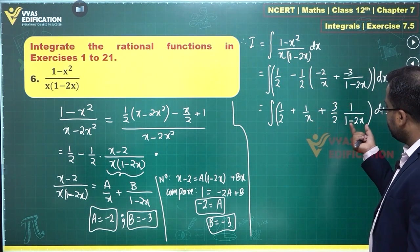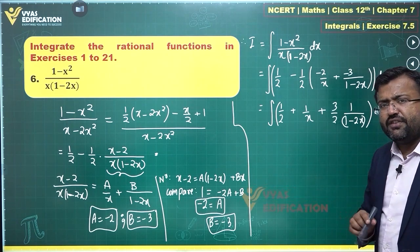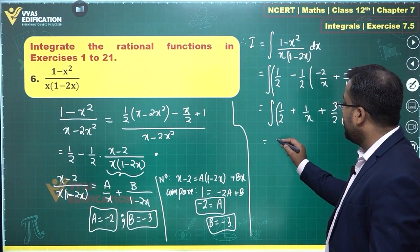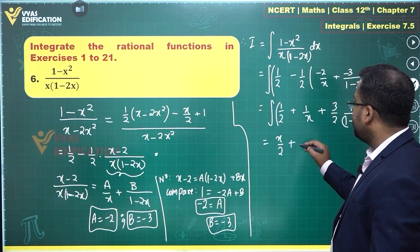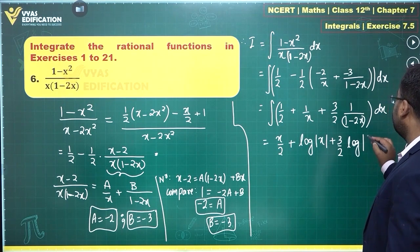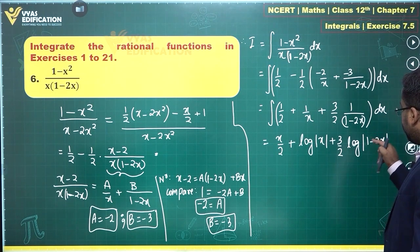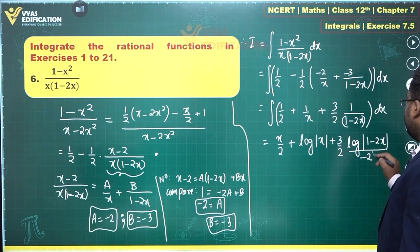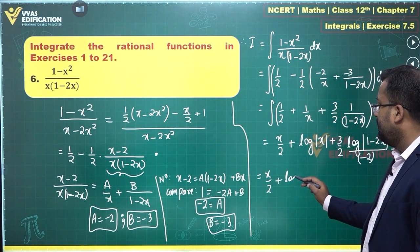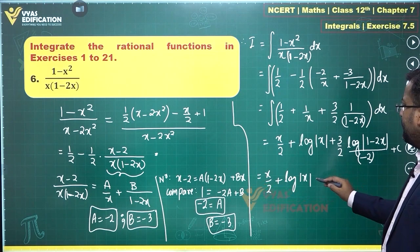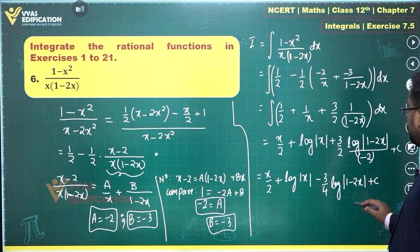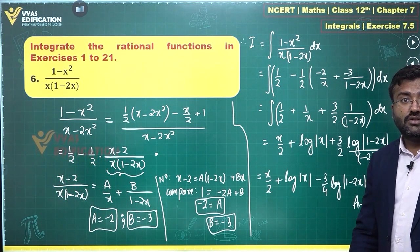These integrals are straightforward. Integrating: 1/2 gives x/2; 1/x gives log modulus of x; and 3/2 times the integral of 1 upon (1 minus 2x) requires dividing by the coefficient of x, which is minus 2. So the final answer is x/2 plus log modulus x minus 3/4 log modulus (1 minus 2x) plus constant. That is the required answer for this question.